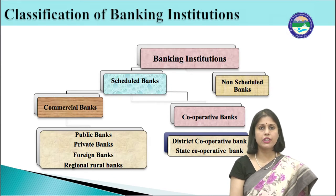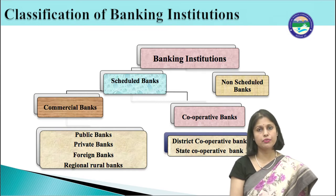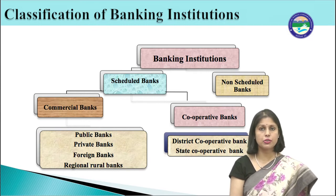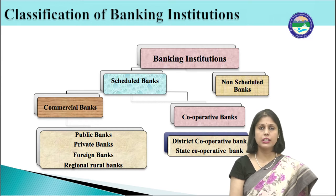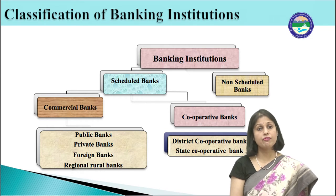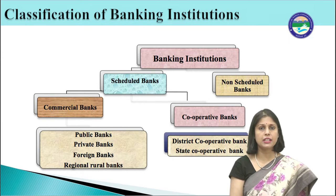Banking institutions are classified into scheduled banks and non-scheduled banks. Scheduled banks are those listed in the second schedule of the Reserve Bank of India Act 1934. At present, there are three non-scheduled banks operating in India. Non-scheduled banks are not eligible for loans from the RBI for day-to-day activities, but under emergency conditions RBI may grant loans to them. Scheduled banks are further classified into commercial banks and cooperative banks. Commercial banks include public sector banks, private sector banks, foreign banks and regional rural banks. Cooperative banks include state cooperative banks and district cooperative banks.